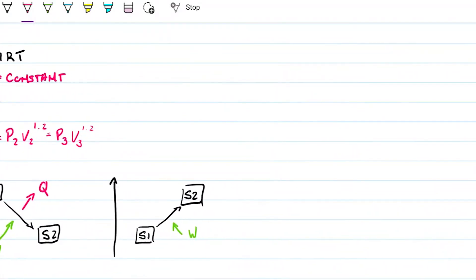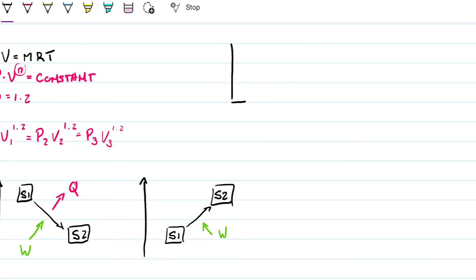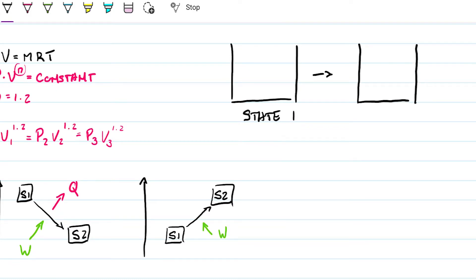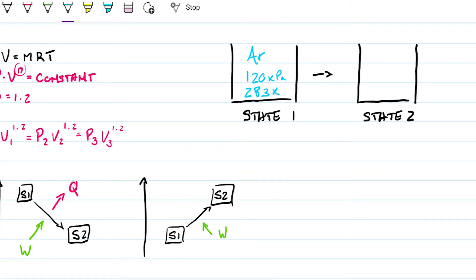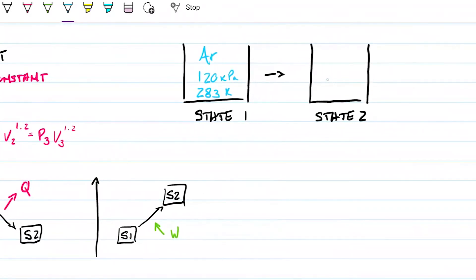So what I'm going to do is define my two states. State one: pressure of 120 kilopascals and 10 degrees Celsius, which is 283 Kelvin — and whenever we have an ideal gas, we work in Kelvin. State two: all I know is this is 800 kilopascals, and obviously this is a polytropic process. No mass was gained or lost.